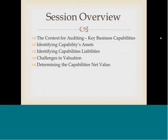In this session we're going to address the context for auditing in terms of what we call key business capabilities. We're going to identify the intellectual capital assets or the knowledge assets for some of those key capabilities. We'll also take a look at what the liabilities might be for some of those assets, look at challenges in assigning a value to those assets, and then discuss what the whole balance sheet might look like in terms of the assets, the liabilities, and the net value of intellectual capital for a particular capability.